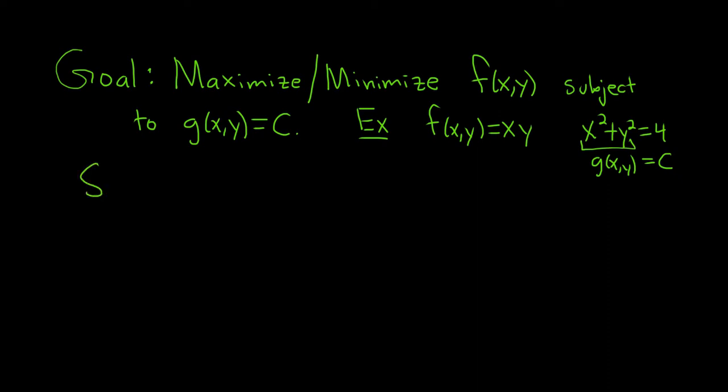So these are the steps in order to do the problem. There are some assumptions here: f and g have to have continuous first partial derivatives, and your curve, g of x, y equals c, has to be a smooth curve.